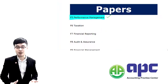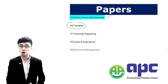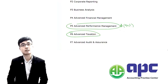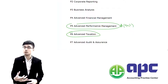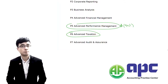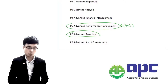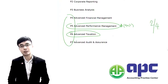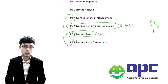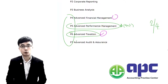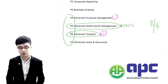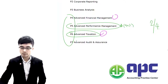F6 is Taxation, which is primarily a calculation-based paper. P6 is Advanced Taxation, and it builds upon the F6 knowledge — there's lots of overlap between these two. If you're good at calculations, P6 will likely be one of your optional papers. However, P6 and P4 both have a huge syllabus requiring a lot of memorisation, though they're not that difficult to pass.